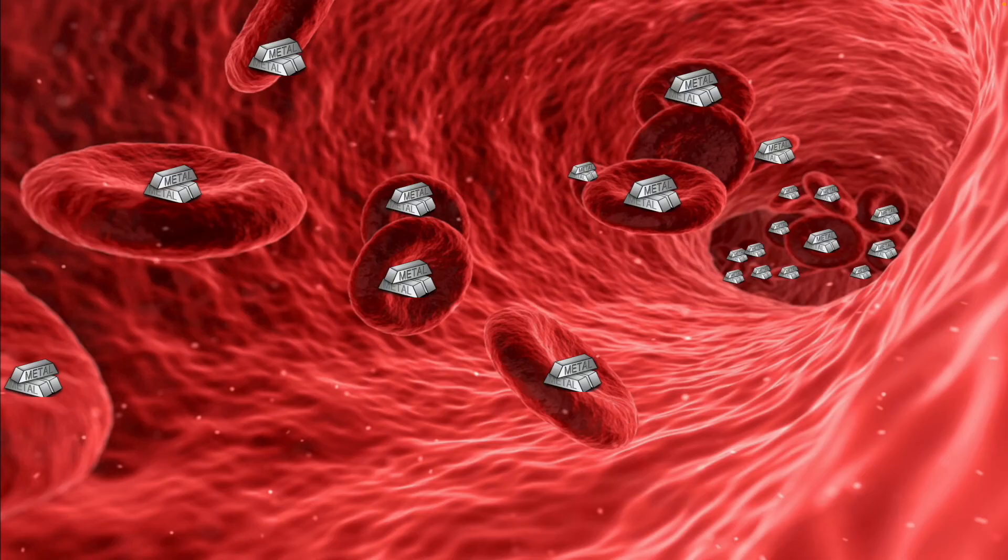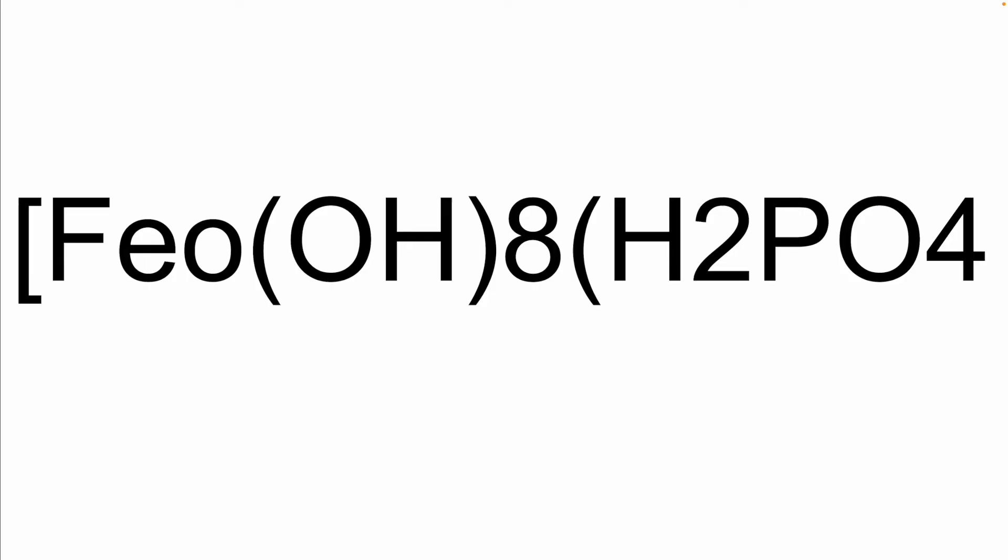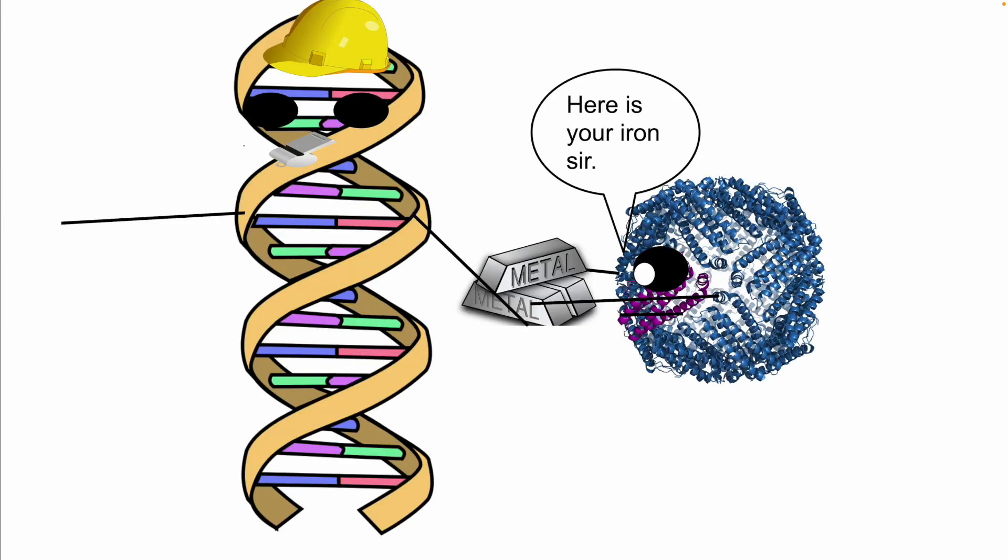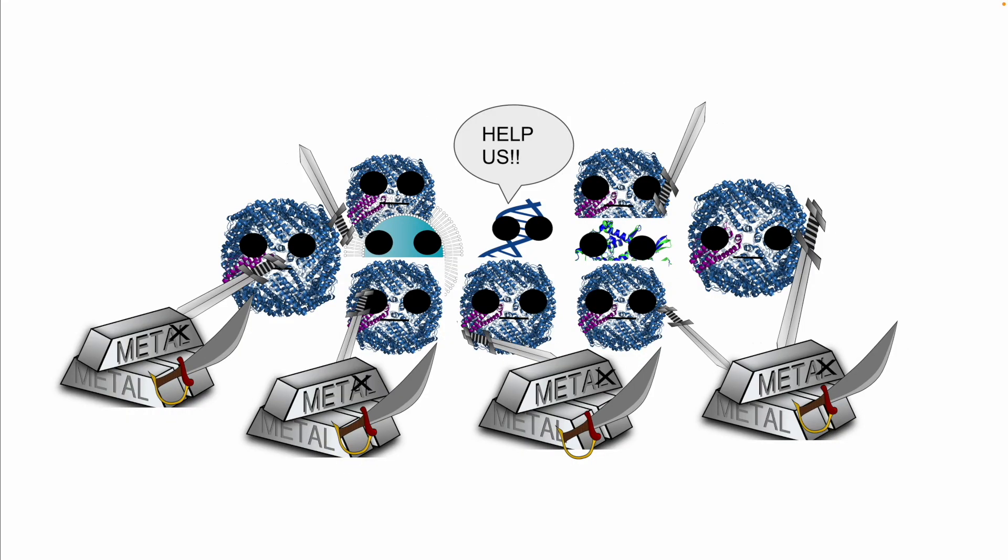Ferritin is another example of a storage protein that stores iron in your cells. This helps a doctor understand how much iron is in your blood. This is its chemical formula. It also makes iron available for necessary cellular processes while it protects lipids, DNA, and proteins from the possible toxic effects of iron.